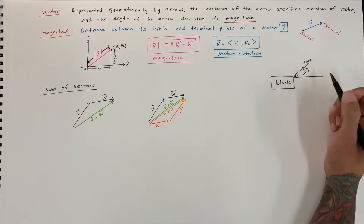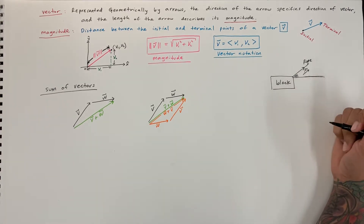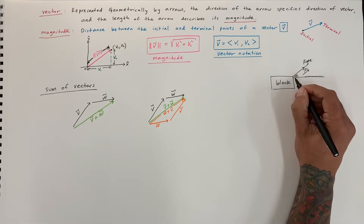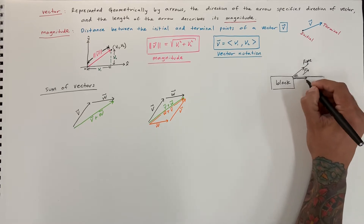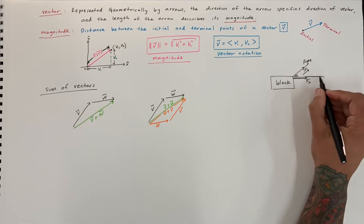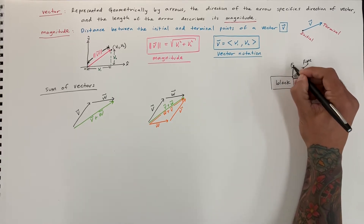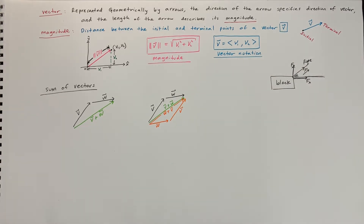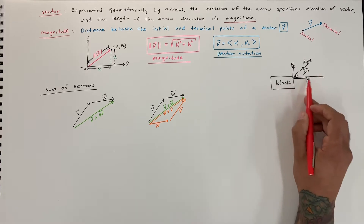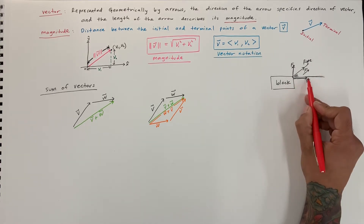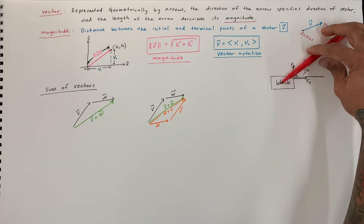This force can be broken up into components. You're actually pulling a little bit in the Fx direction — a force in the x — and you also have a force in the y direction. These are the components. You can break up one single force to understand exactly how much you're exerting in the x and how much in the y.